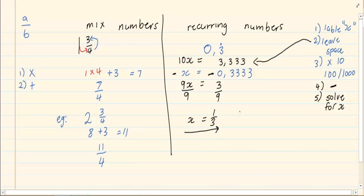You have now got it into the form of A over B proving that it is a rational number. Thank you for watching this video.